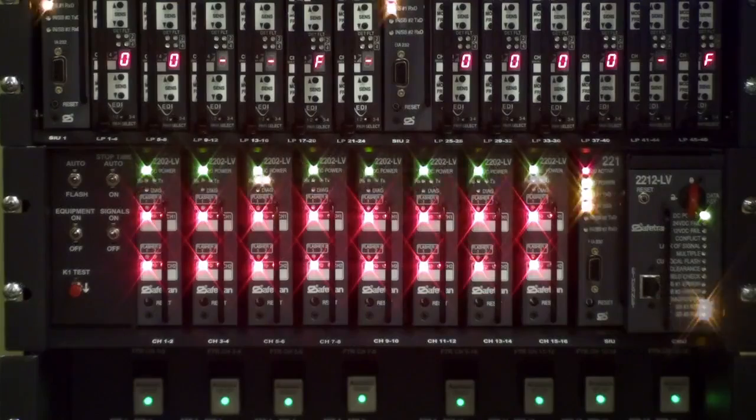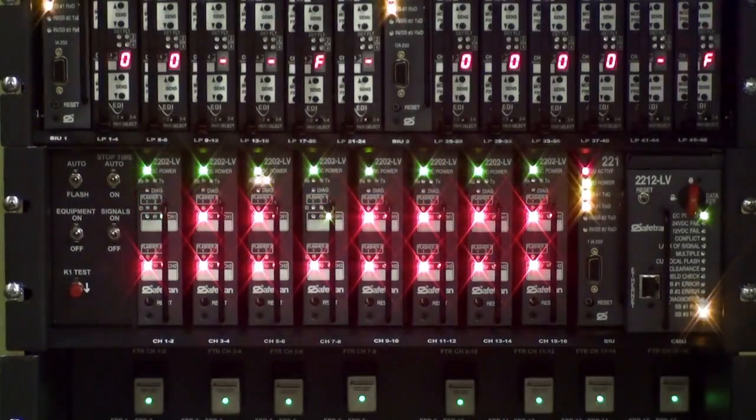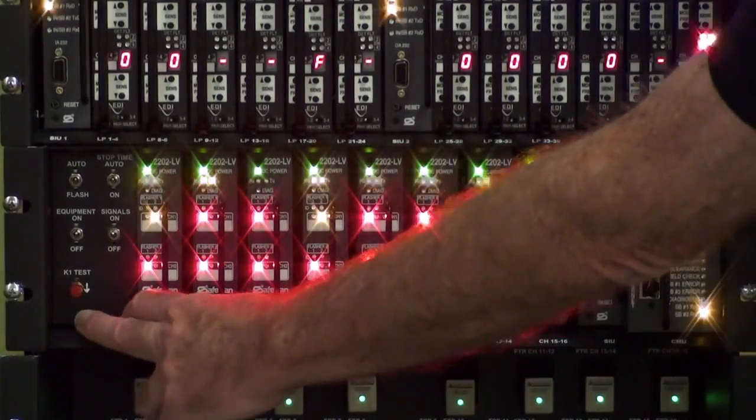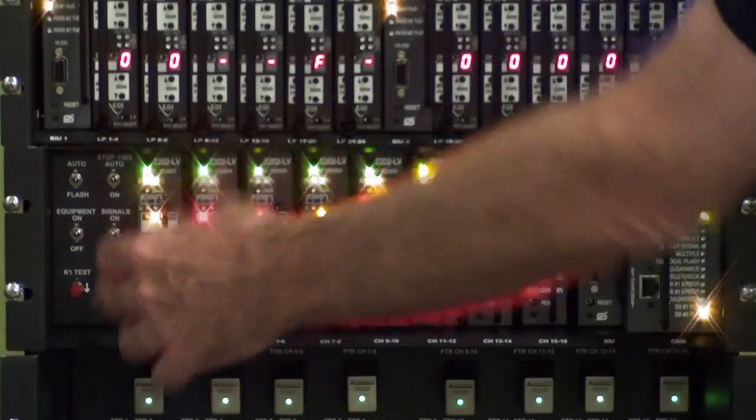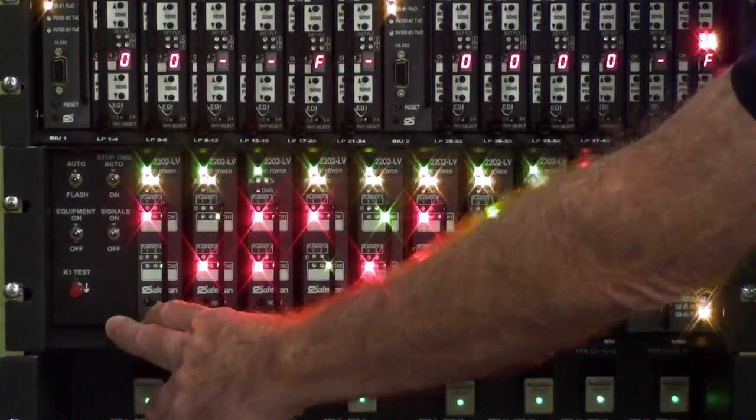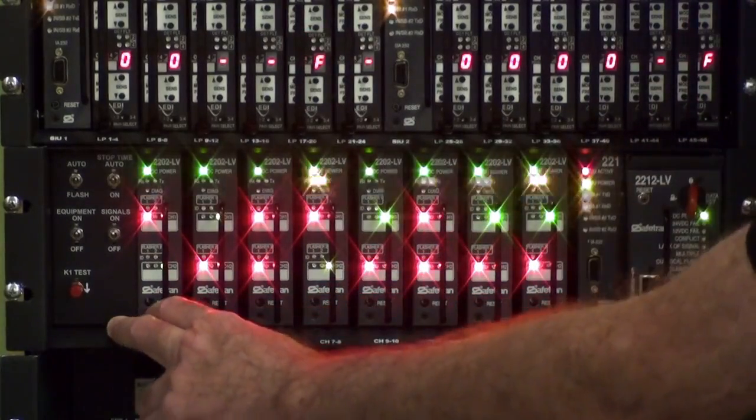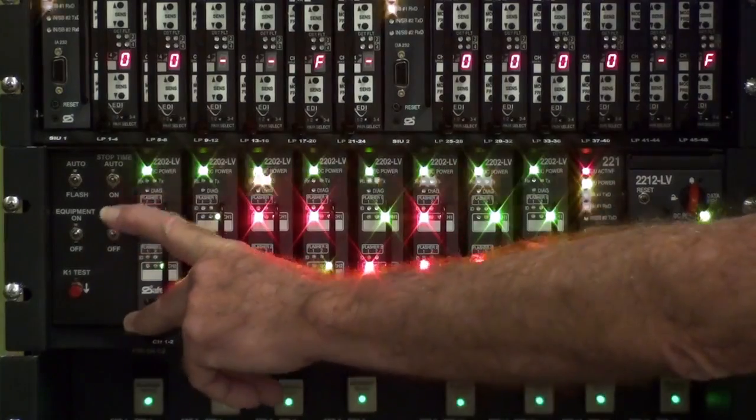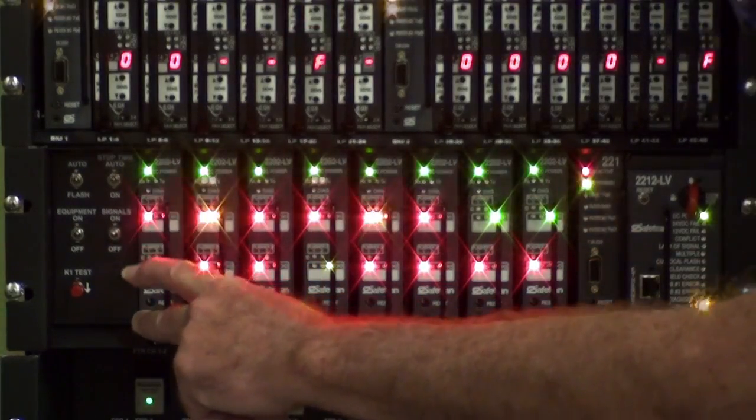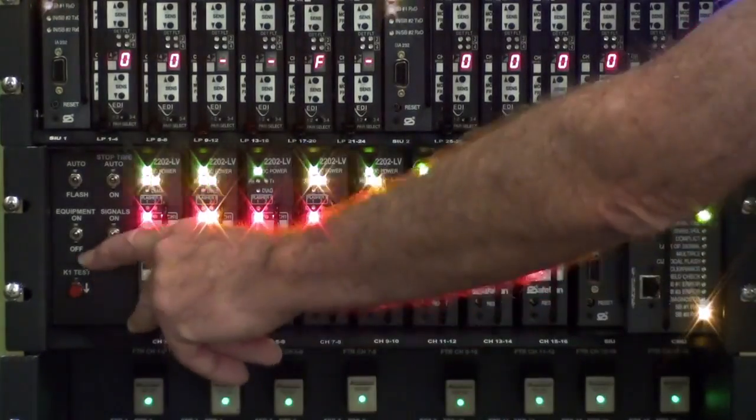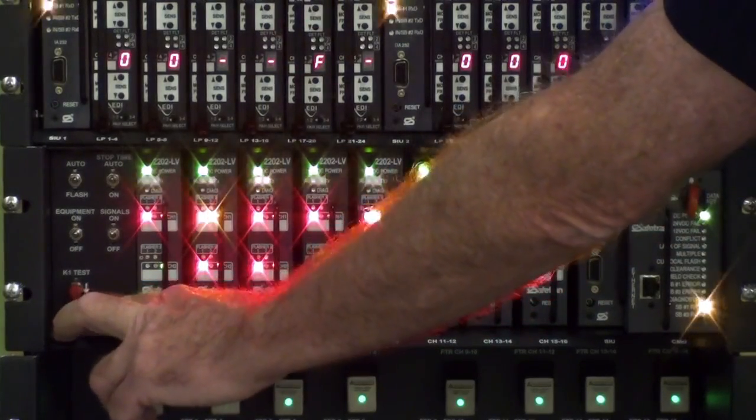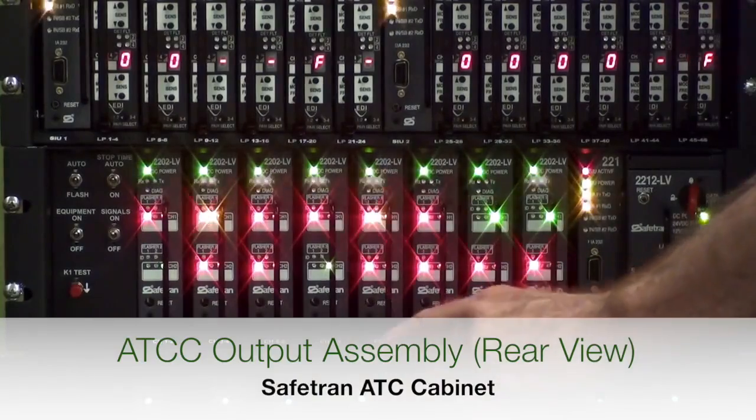Located on the front left side of the output assembly are the technician switches, as opposed to a NEMA cabinet, where they are located on the back side of the police panel. The switches include the auto flash, stop time, signals on-off, and equipment on-off. It also has this 24-volt DC test switch. This allows you to turn on the output indicators on the HDSPs momentarily to visually observe the state of the intersection when it went into flash. Additionally, the main contactor is located within the output assembly, directly behind the technician switches.